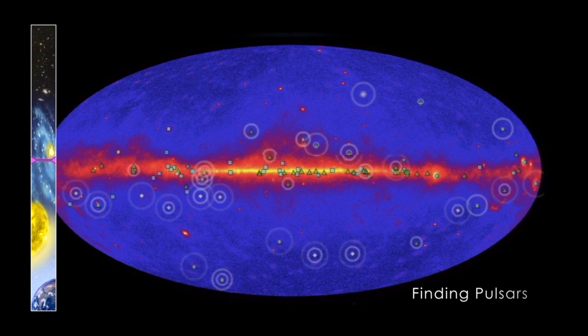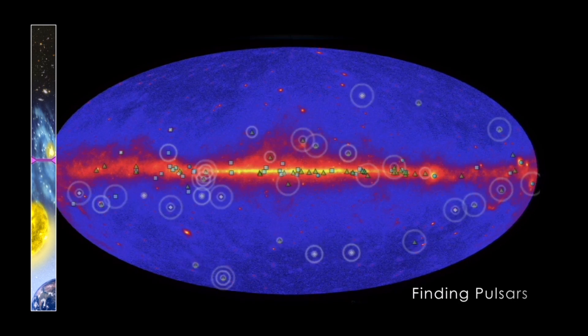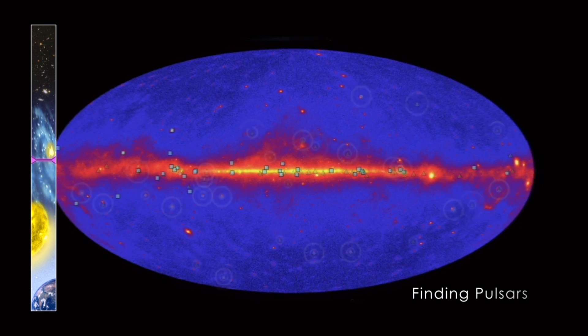In three years, Fermi has detected more than 100 gamma ray pulsars, and about a third of gamma ray pulsars were discovered by Fermi on the basis of their gamma ray pulsations alone.